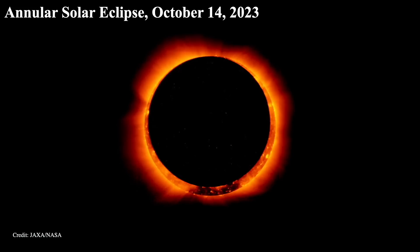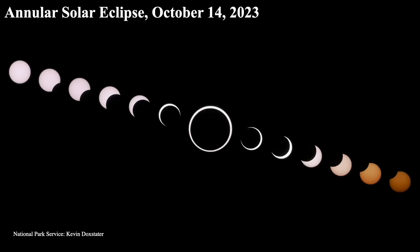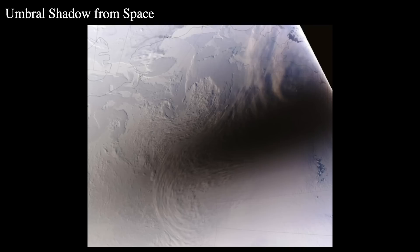For an annular solar eclipse, here's one that happened on October 14th, 2023, taken by JAXA and NASA using the solar telescope Hinode as the moon came between it and the sun. You can find this image at science.nasa.gov. This next image was taken by the National Park Service by Kevin Doxstater on October 14th from the Desert Southwest — a progression of all the images taken together. And here, the umbral shadow is seen from space, aboard the International Space Station on November 13th, 2003, downloaded from NASA's Goddard Space Flight Center.